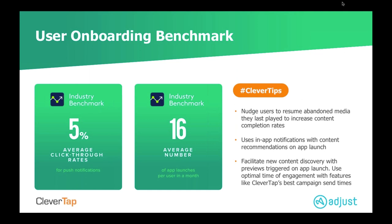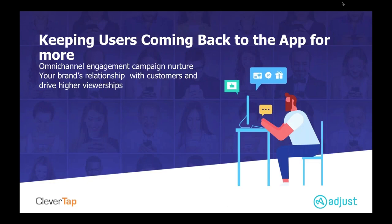You also want to facilitate new content discovery based on previews triggered on app launch — we have features to help you optimize the best campaign send times to do so. Of course, use an omni-channel engagement campaign strategy to keep your users coming back for more. The engagement features to look at include push notifications, in-app messaging, SMS, email, web pop-up and web push if you have a web experience, and Facebook remarketing — pulling the whole picture together to drive retention as part of the overall customer lifecycle management strategy.